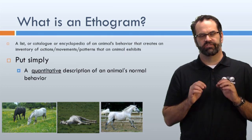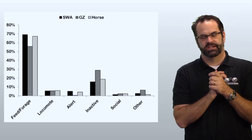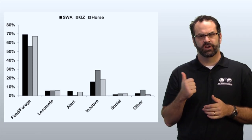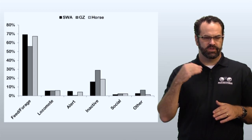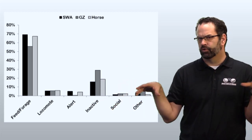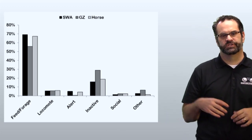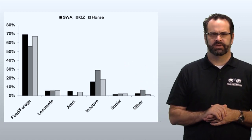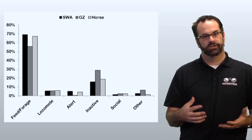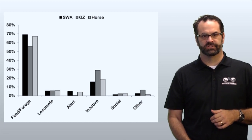An ethogram lets us scientifically evaluate behaviors. In the previous lecture I talked about using it as a tool for looking at time budgets in the Somali wild ass, Grevy's zebra, and horses. We took over 1,500 observations — not all at once, but sometimes two or three of us observing different focal animals, writing down behaviors every 30 seconds and compiling that data. That's why you work in research groups: collaboration makes your study more powerful, and nobody can realistically collect 1,500 observations alone.